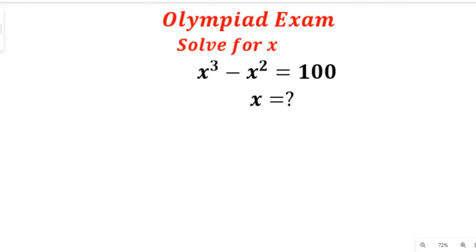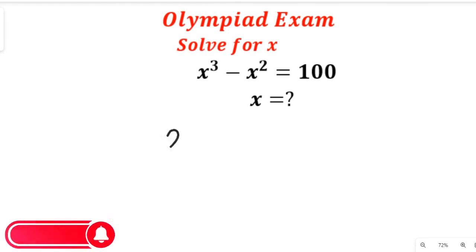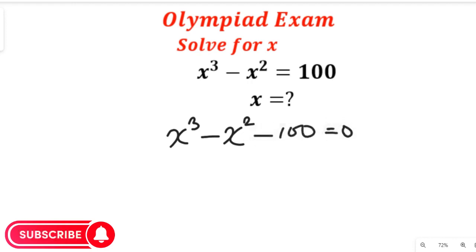Now let's solve. We are going to simplify this equation. We'll have x to the power of 3 minus x to the power of 2 equal to negative 100, and that will be equal to zero. Remember, 100 comes to the other side and the negative becomes positive. Now we're going to simplify this by using 125.